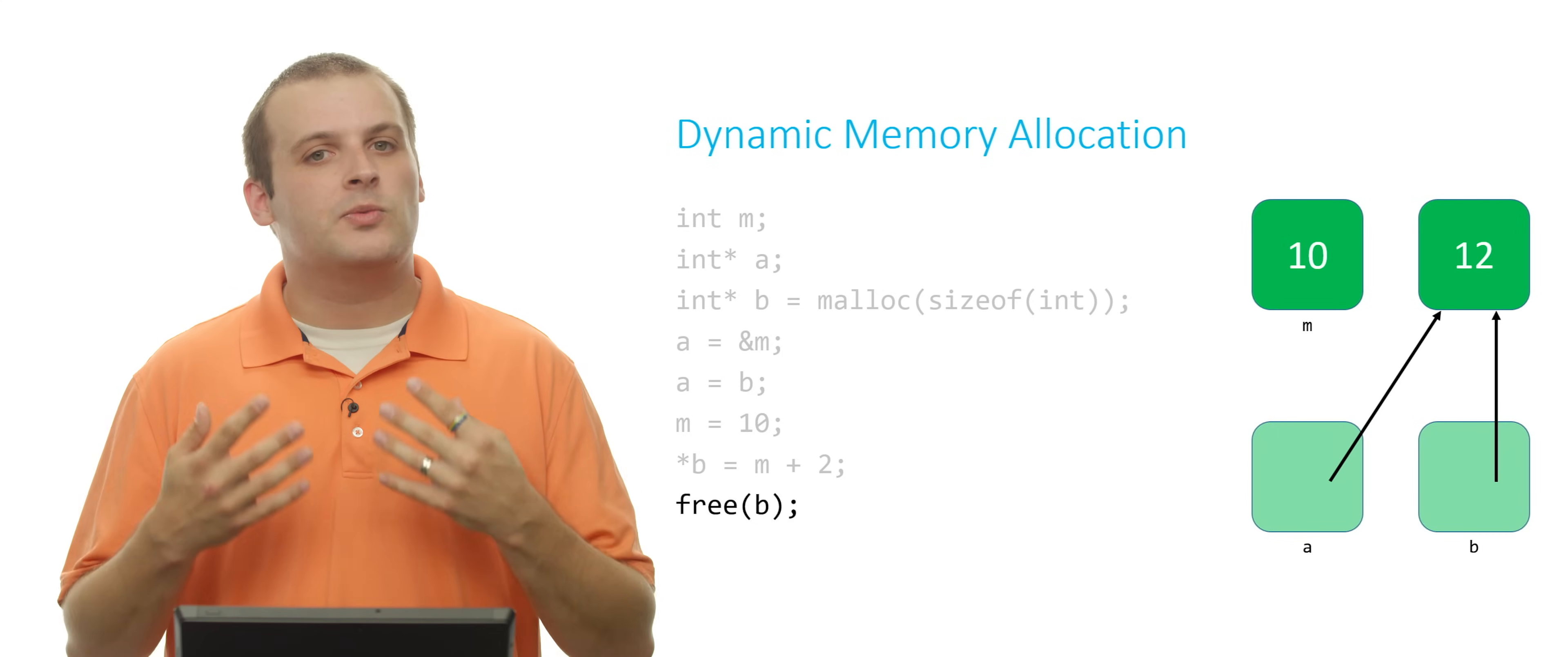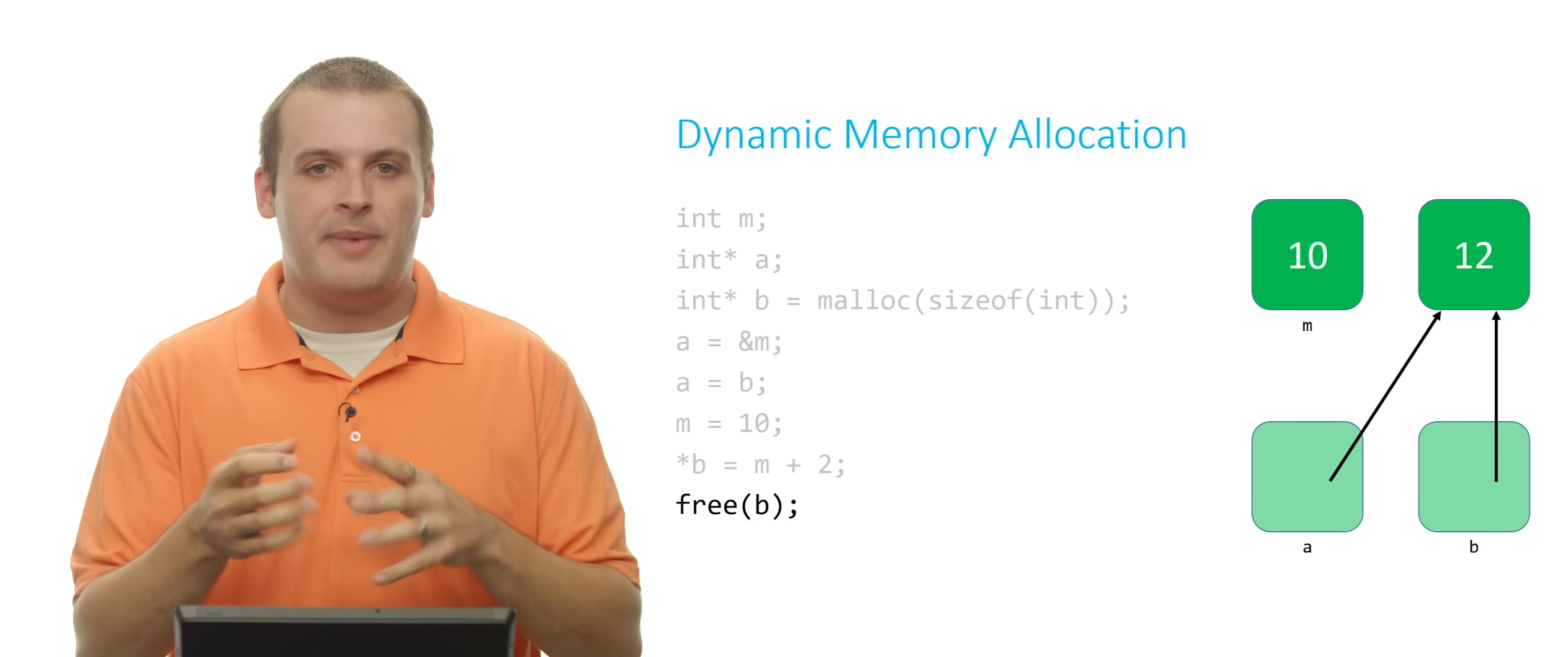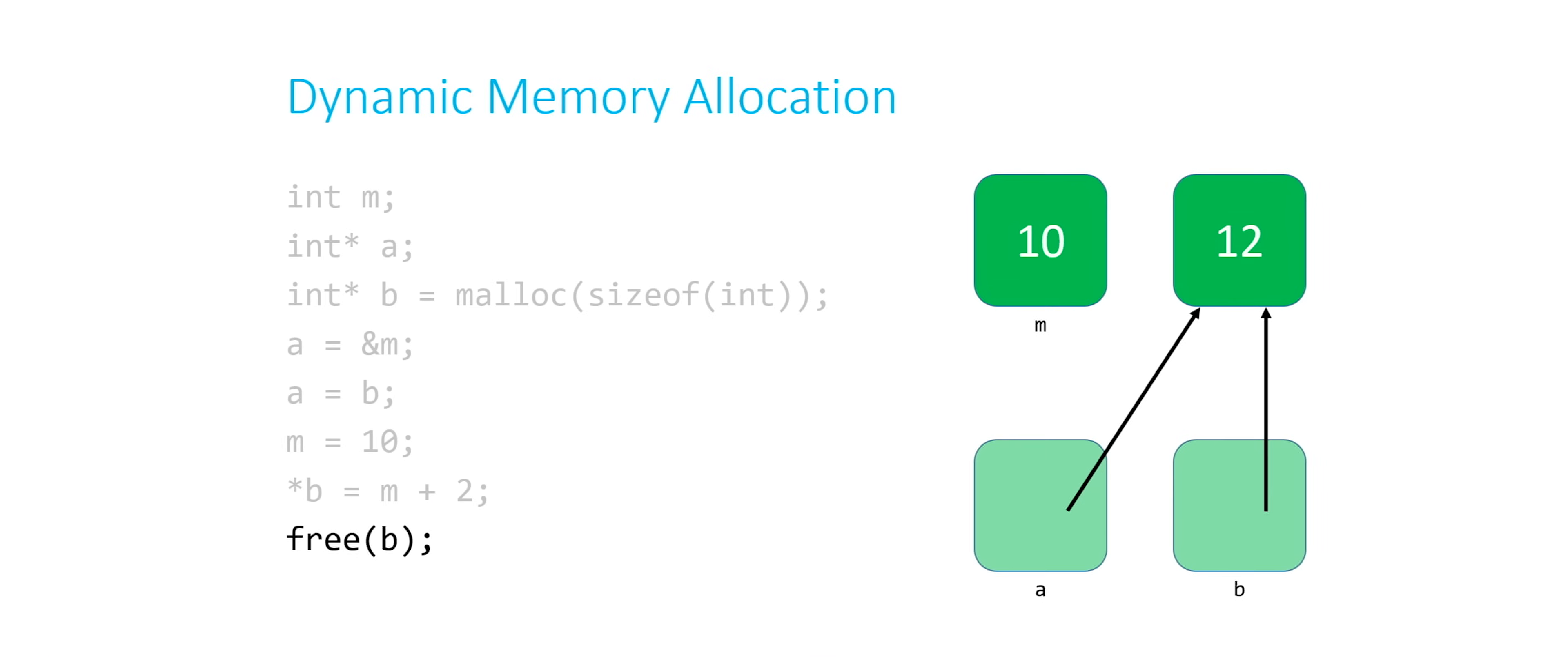You can take these four bytes back or whatever the size of this is. This one happens to be four bytes. You can take it back and use it for whatever you want in some other program. So when I free b, this memory basically goes away.